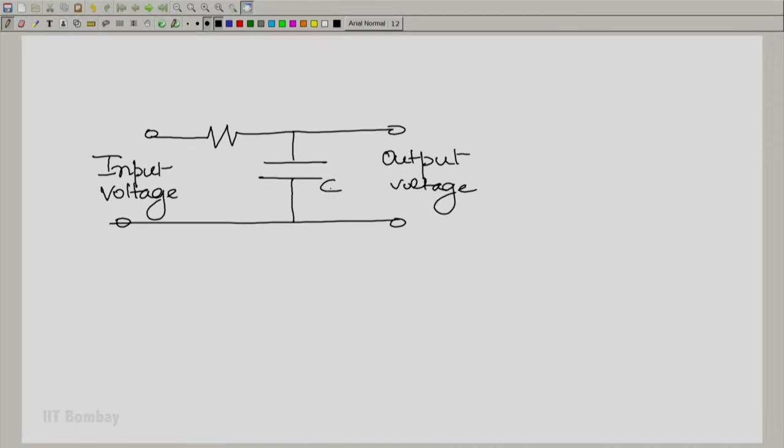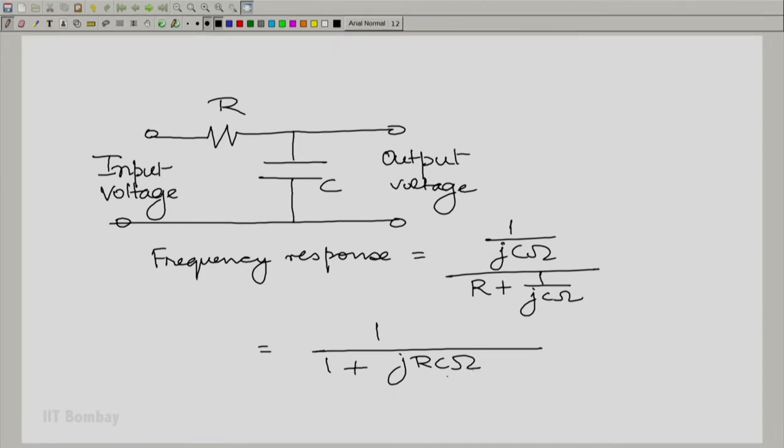The capacitance is of value C, the resistance of value R. And let us write down the frequency response of this system, this circuit. Here omega denotes the frequency or the angular frequency. And let RC be denoted as tau, the time constant. This is the frequency response.